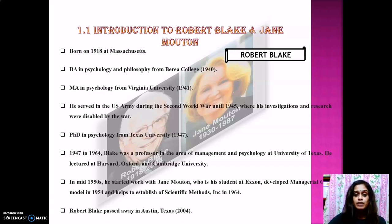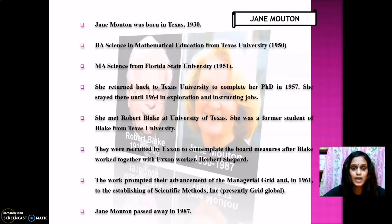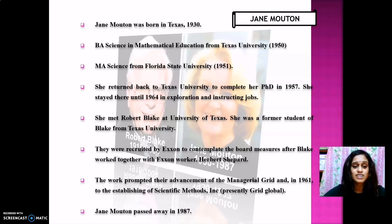Robert Blake passed away in Austin, Texas in 2004. Our next scholar is Jane Morton. Jane Morton was born in Texas in 1930. She did a Bachelor of Science in Mathematical Education from Texas University in 1950, and a Master of Science from Florida State University in 1951.